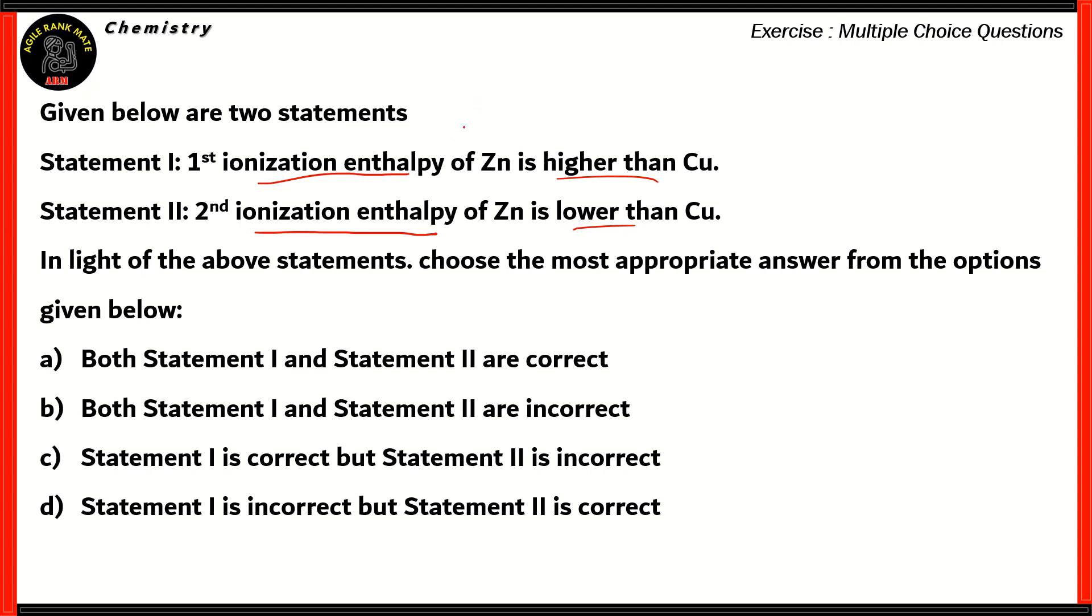So, if you look at statement one, it says, first ionization enthalpy of zinc is higher than that of copper. Now, if you look at the electronic configuration of zinc, zinc has argon 4s2 3d10. Whereas copper has argon 4s1 3d10. Now, as you can see, zinc has fulfilled orbitals. So, the first ionization enthalpy is to change Zn to Zn+. Now, over here, it's quite difficult to get that electron out because it's in a fulfilled orbital. So, therefore, the first ionization enthalpy of zinc is high.